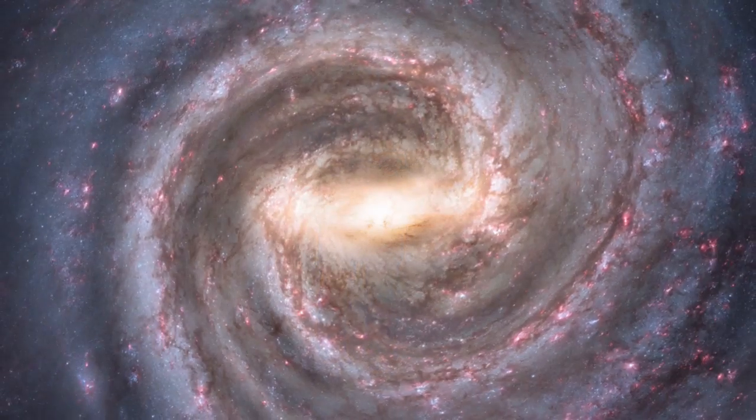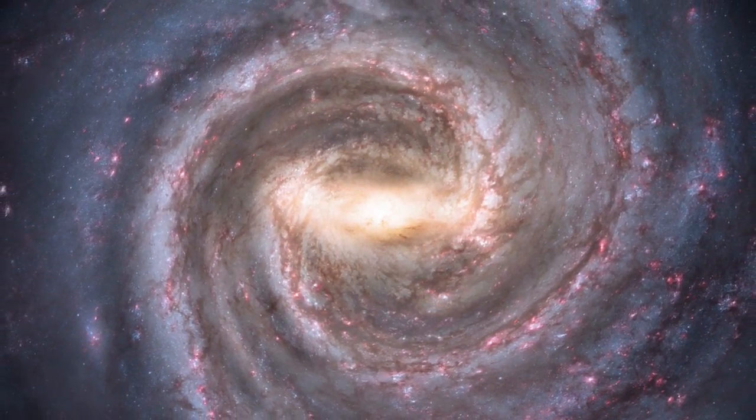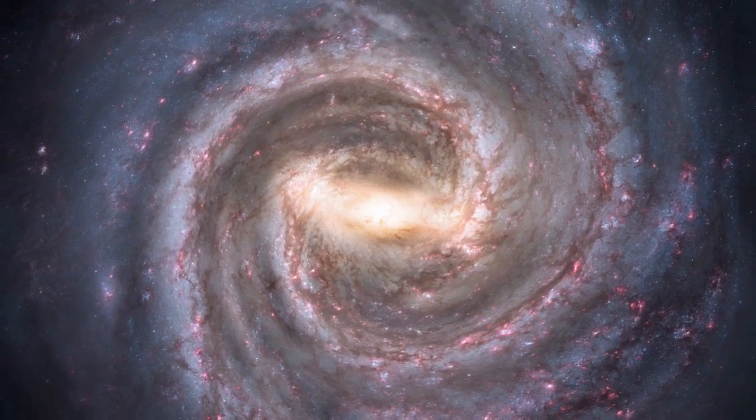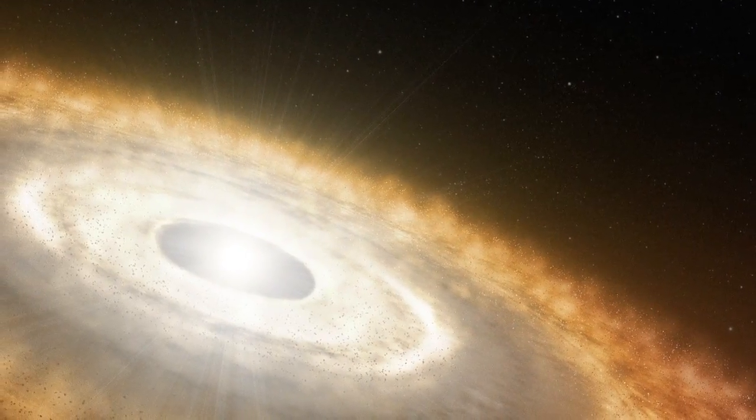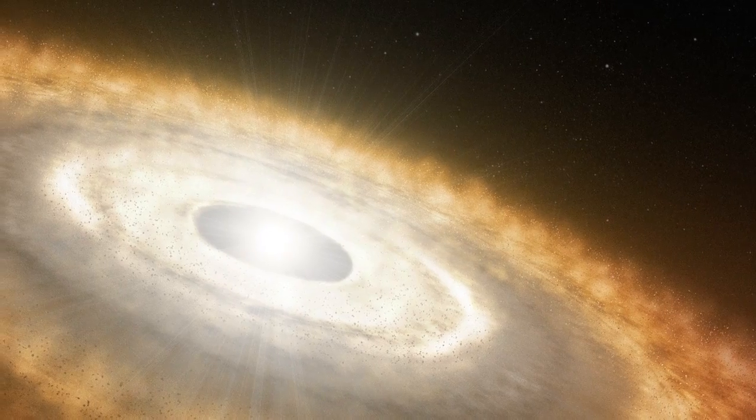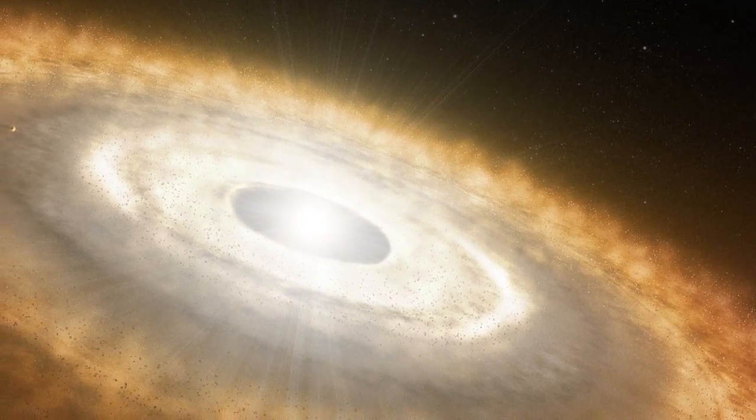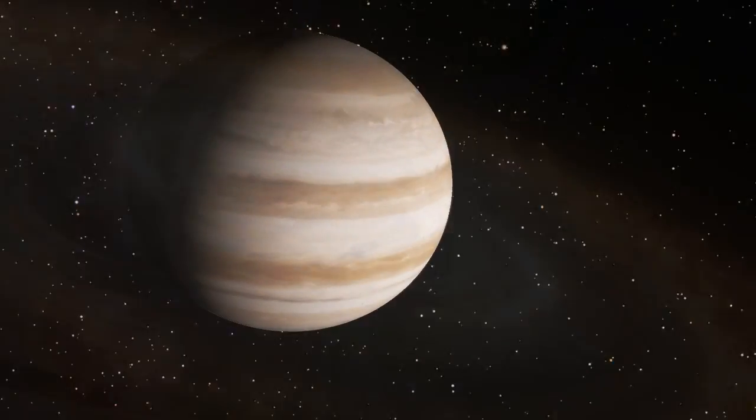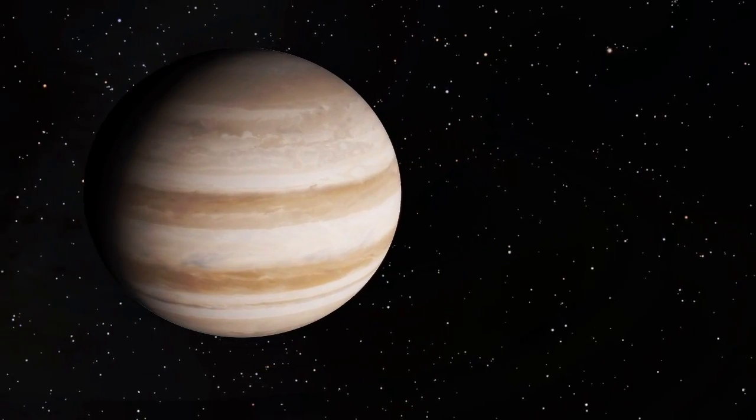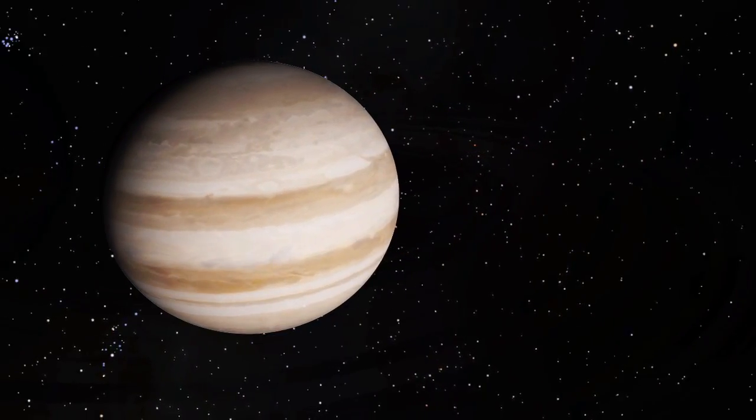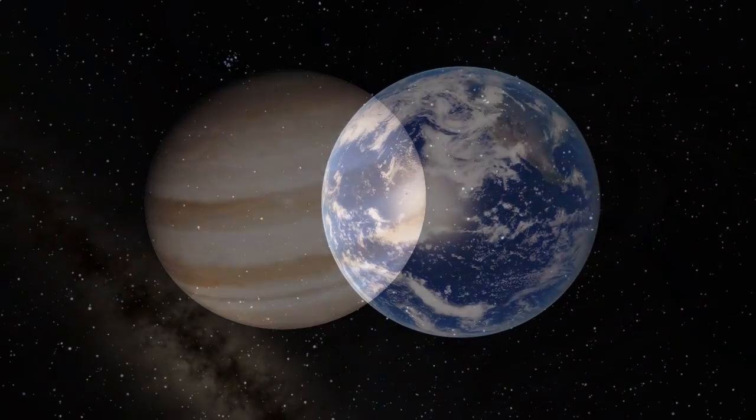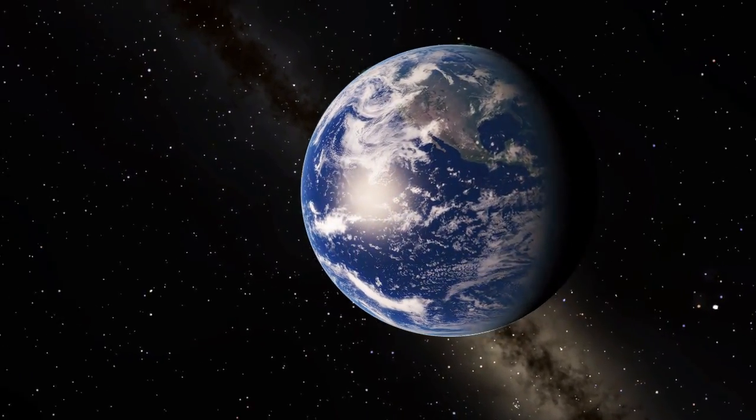This means just by chance, just by probability, there will be many universes that will have a galaxy that looks exactly like our Milky Way galaxy. And within that galaxy, a star will form that looks exactly like our sun. And around that star, there will be planets that look exactly like the planets in our solar system. And one of those planets is a planet that looks exactly like Earth.